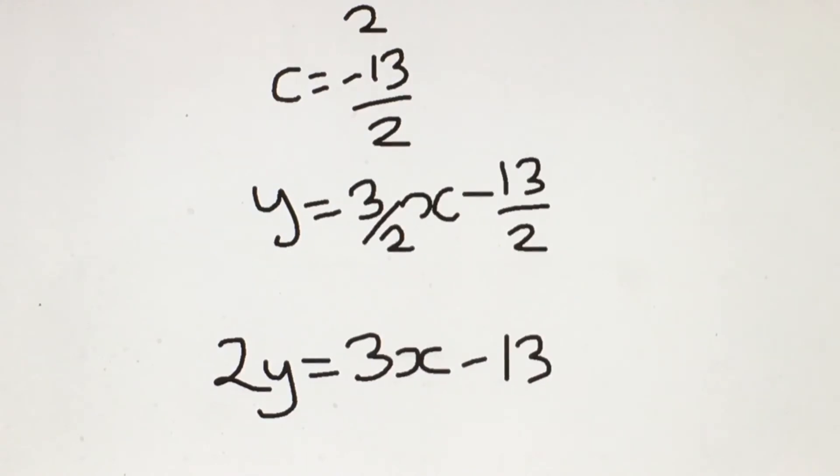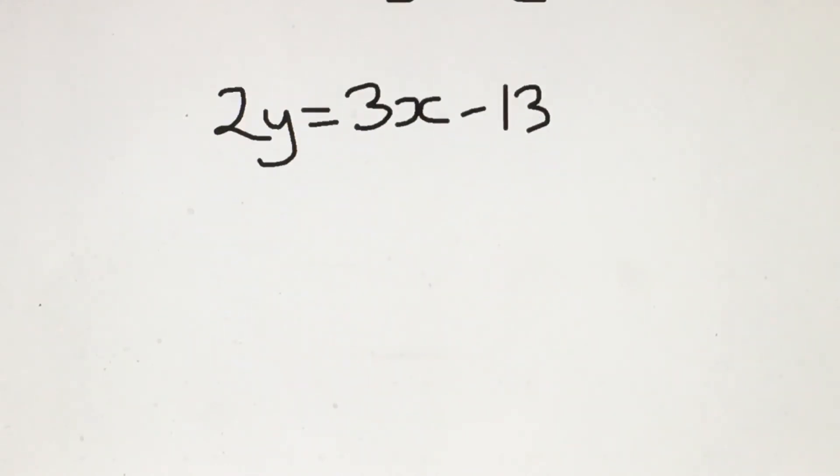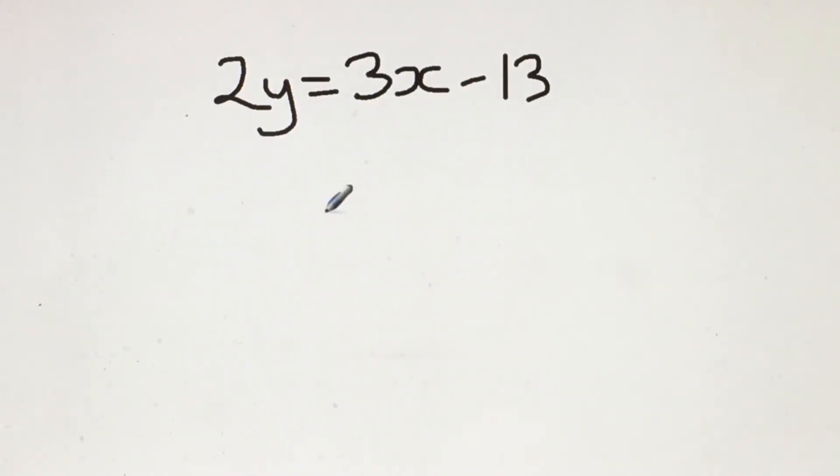I'm going to subtract 3x from both sides and plus 13 to both sides. So we're left with 2y minus 3x plus 13 equals 0.